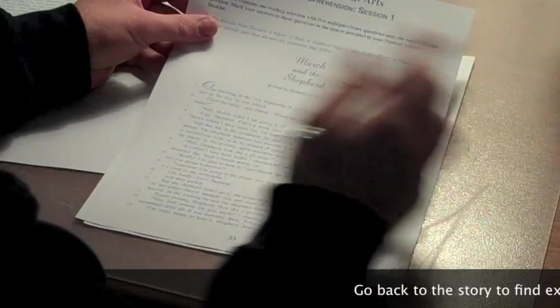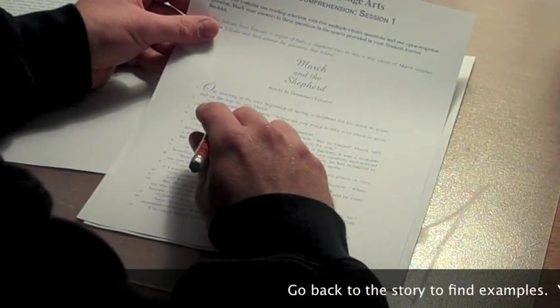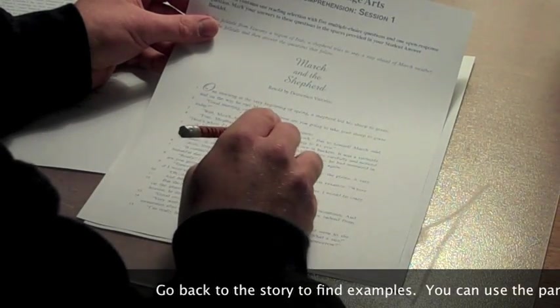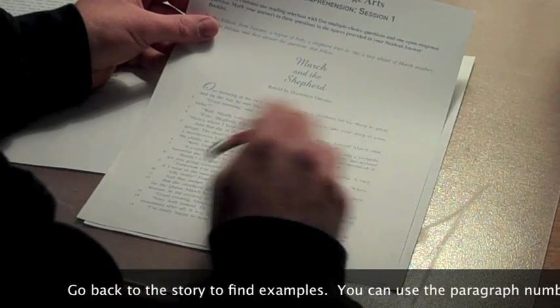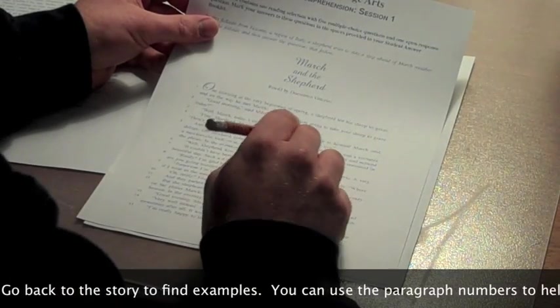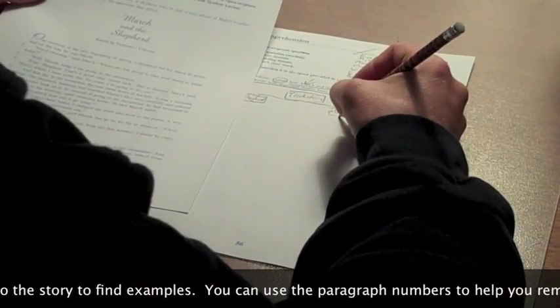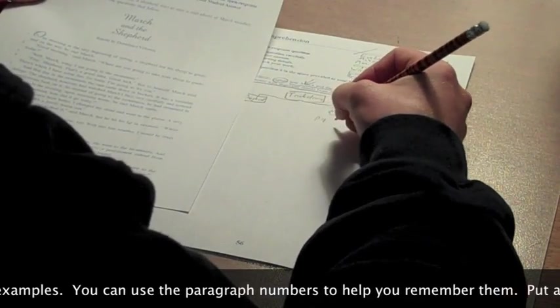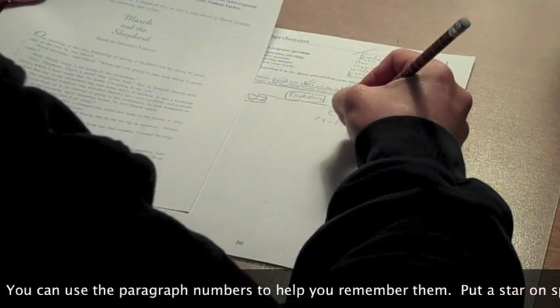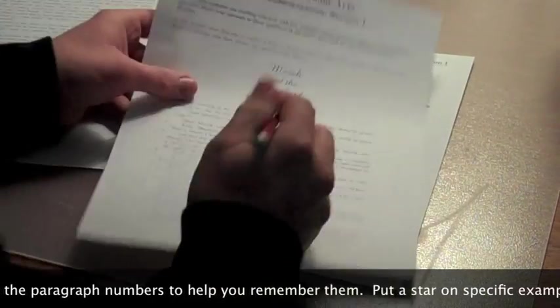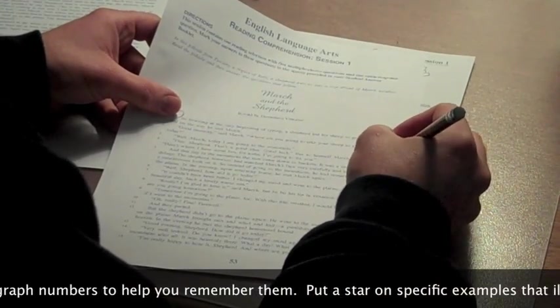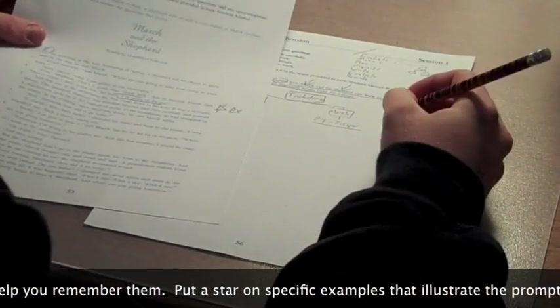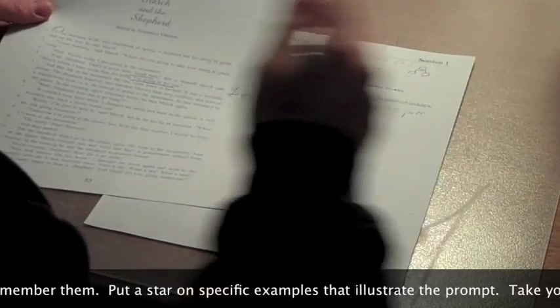One morning at the beginning of spring a Shepherd led his sheep to graze. March said 'where are you going?' The shepherd says 'to the mountains.' March said 'fine, good luck,' but to himself March said 'here's where I have some fun, for today I'm going to fix you.' So first example, paragraph 4 - 'I'm going to fix you.' He says good luck but means the other.